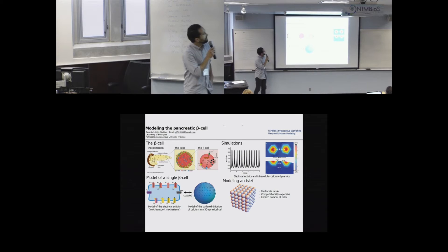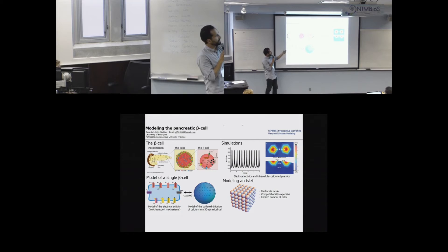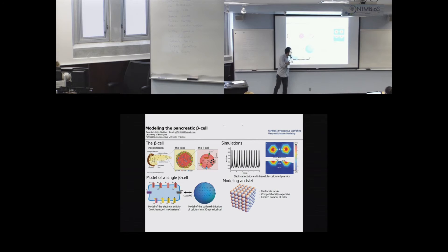I want to show our models of the pancreatic beta cell — the only cell capable of secreting insulin. The cell produces electrical activity, allowing calcium influx into the intracellular space, which is the key signal for insulin secretion. We built a model with two components: a single-cell model of electrical activity including all ionic transfer mechanisms and metabolism, coupled with a model of buffer-diffusion of calcium.